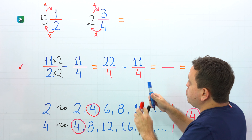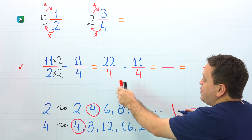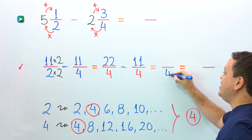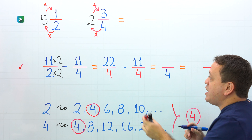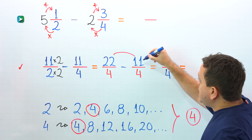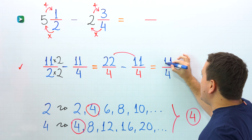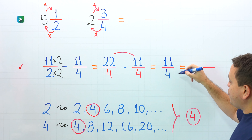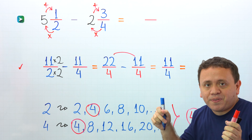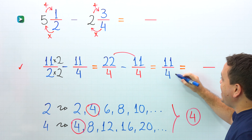Next, we need to subtract 22 fourths minus 11 fourths. These two fractions have the same denominator: 4 on the left, 4 on the right. We continue by subtracting the numerators: 22 minus 11 gives us 11. The answer is 11 fourths. Also, 11 fourths is an improper fraction, given that the numerator 11 is greater than the denominator 4.